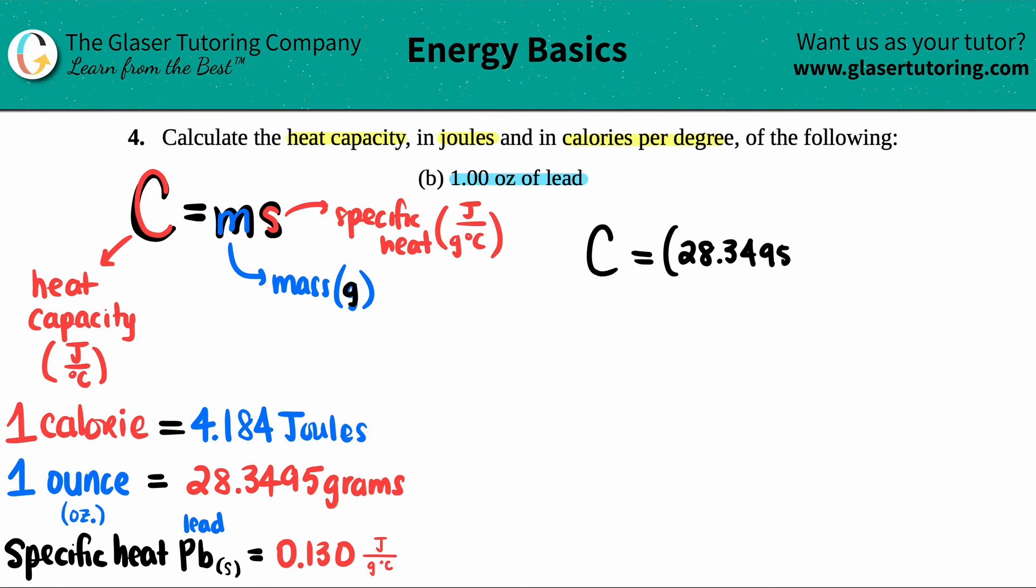Now I got to put my specific heat in. That's the s value, and it's lead. You have to go to a table to find that number. The specific heat of lead solid is 0.130. All I got to do is multiply them. C is 28.3495 times 0.13.